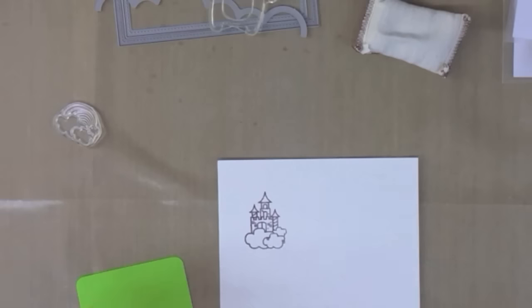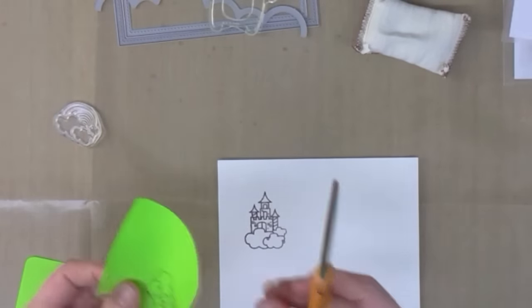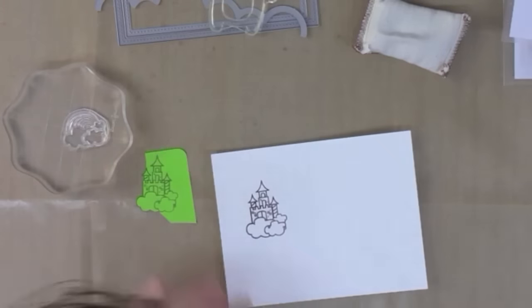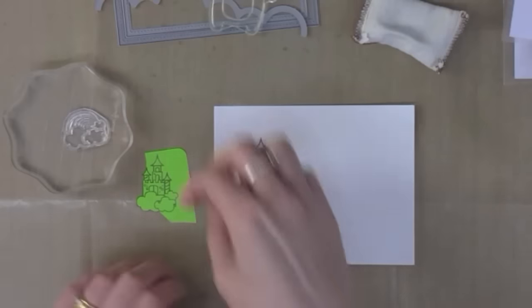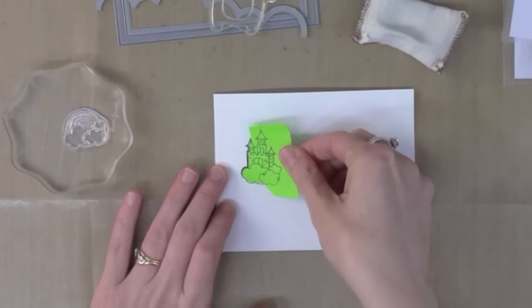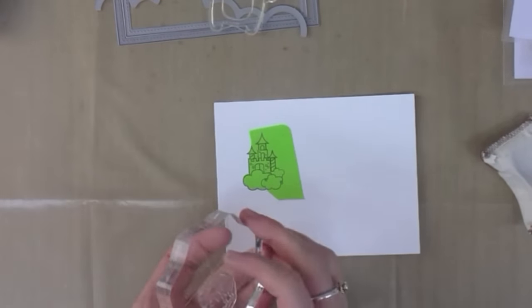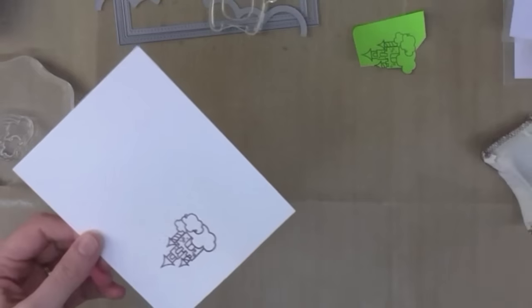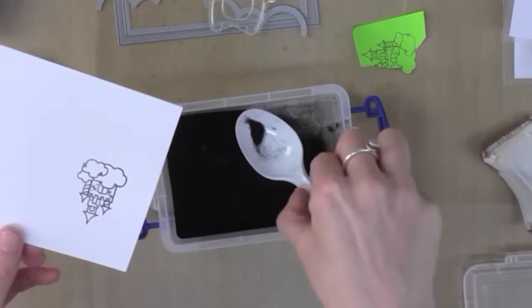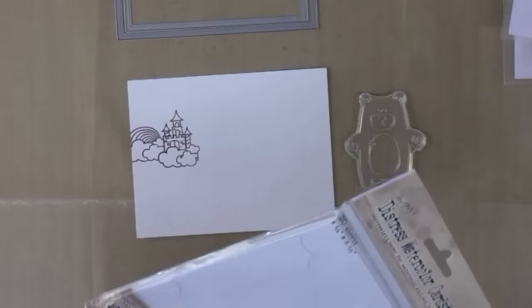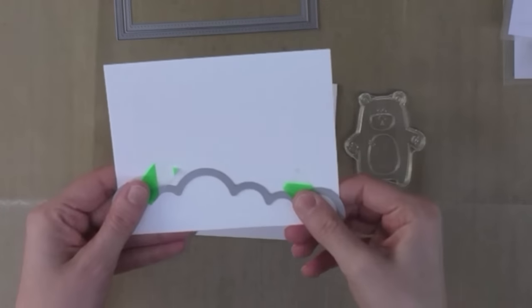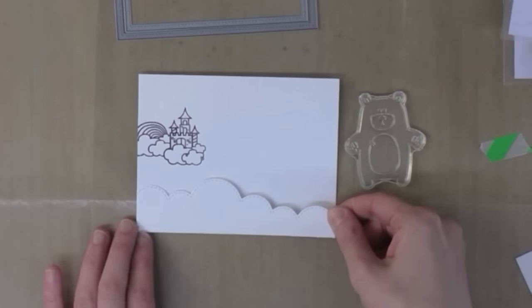First of all I'm stamping some of the images onto the background and I'm using some Versamark ink, the clear sticky ink for embossing, and I've embossed using some black embossing powder. Now I'm actually going to do a little bit of masking here because I want the cloud and rainbow to be kind of tucked behind this palace in the clouds. I've masked it off using some sticky post-it paper and then inked up the stamp, stamped it, removed the mask and then sprinkled my embossing powder on top. I have heat set this with my embossing tool.